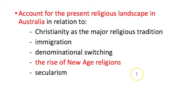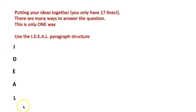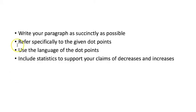You could also comment on new age religions and the fact that people are more free to choose — people prefer spirituality where they can pick and choose parts of different practices they like. Go back and review your notes, then write that ideal paragraph. Remember to write succinctly, refer specifically to the given dot points, use the language of the dot points, and include statistics from 2006 and 2011 to support your claims of decreases, increases, and faiths which maintain their status quo.